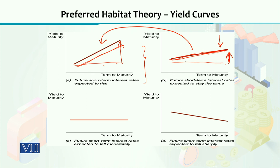From the steepness and flatness of the yield curve, you can infer investor expectations. There is also a case where the yield curve is drawn as a horizontal straight line, indicating that short-term yields are expected to fall only moderately. Alternatively, the yield curve can be seen to be inverted or sloping downwards, showing that short-term interest rates are expected to fall sharply.